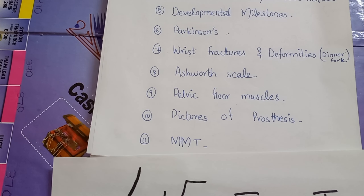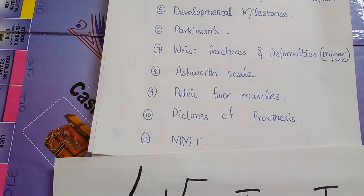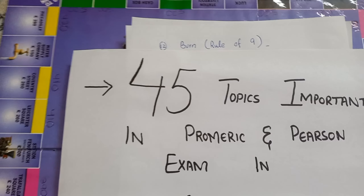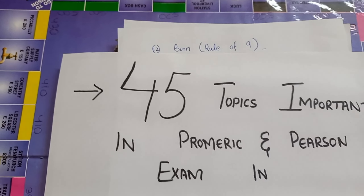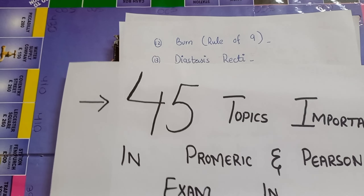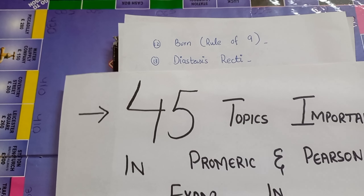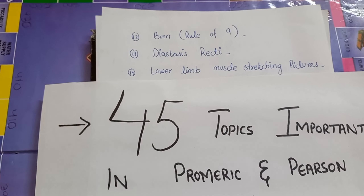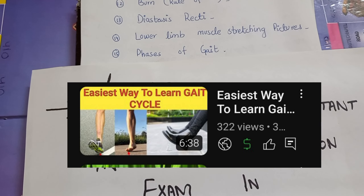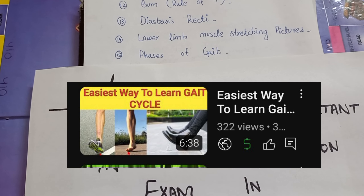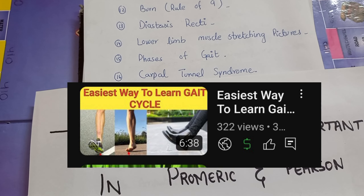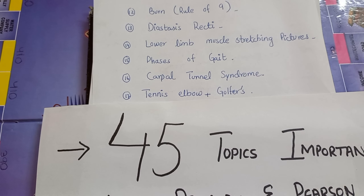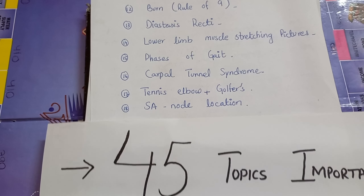Number eleven is MMT — manual muscle testing. Number twelve is burn rule of nines. Diastasis recti is very important. Lower limb muscle stretching pictures and identifying phases of gait are also important. Number sixteen is carpal tunnel syndrome. Number seventeen is tennis elbow plus golfer's elbow.